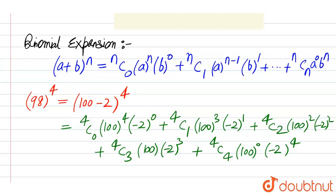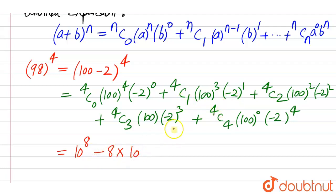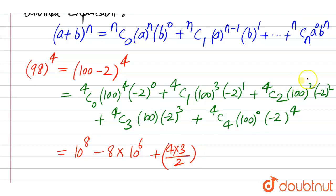We can write this as: 4C0 is 1, minus 2 to the power 0 is also 1, so the first term is 10 to the power 8. Then 4C1 into minus 2 is minus 8, multiplied by 10 to the power 6. Then 4C2 is 6, or 4 into 3 divided by 2, and we have 100 squared which is 10 to the power 4, and minus 2 squared is 4.